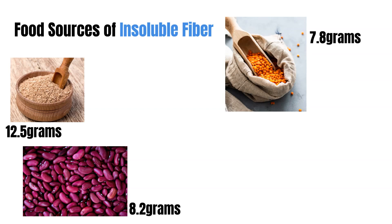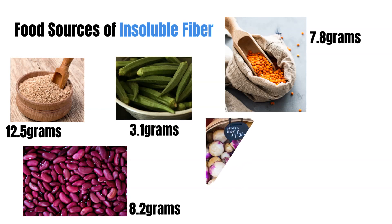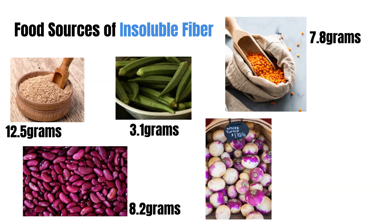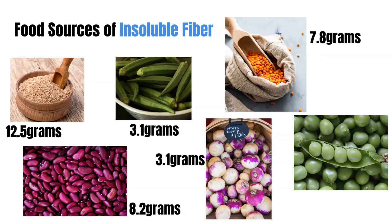Black beans also have both insoluble and soluble fiber, hitting around 7.5 grams. Okra: half a cup gives 3.1 grams — okra is awesome, you should all try it. Turnip: half a cup of cooked turnip also gives 3.1 grams of insoluble fiber. And peas: half a cup of peas gives around 3 grams of insoluble fiber. A combined total — we should be hitting that 25 to 30 grams per day. Have half a cup of oat bran or wheat bran for breakfast and we'll be there.